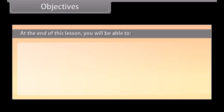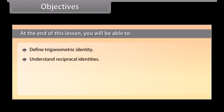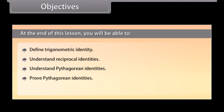Objectives: At the end of this lesson you will be able to define trigonometric identity, understand reciprocal identities, understand Pythagorean identities, prove Pythagorean identities, and solve examples related to Pythagorean identities.